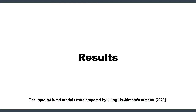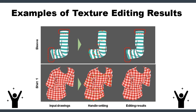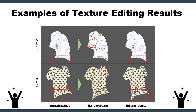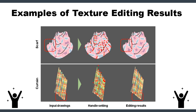Lastly, we show some texture editing results based on our system. These results include sleeve, shirt, scarf, and curtain models. From these results, we confirm the proposed system can consider discontinuous regions and make natural-looking texturing within 10 minutes.